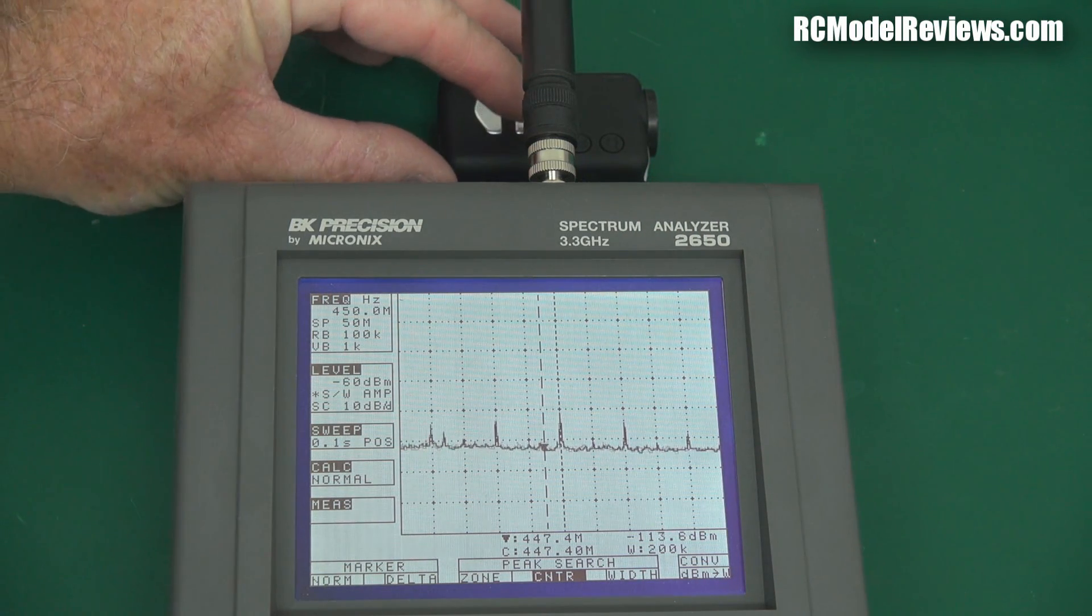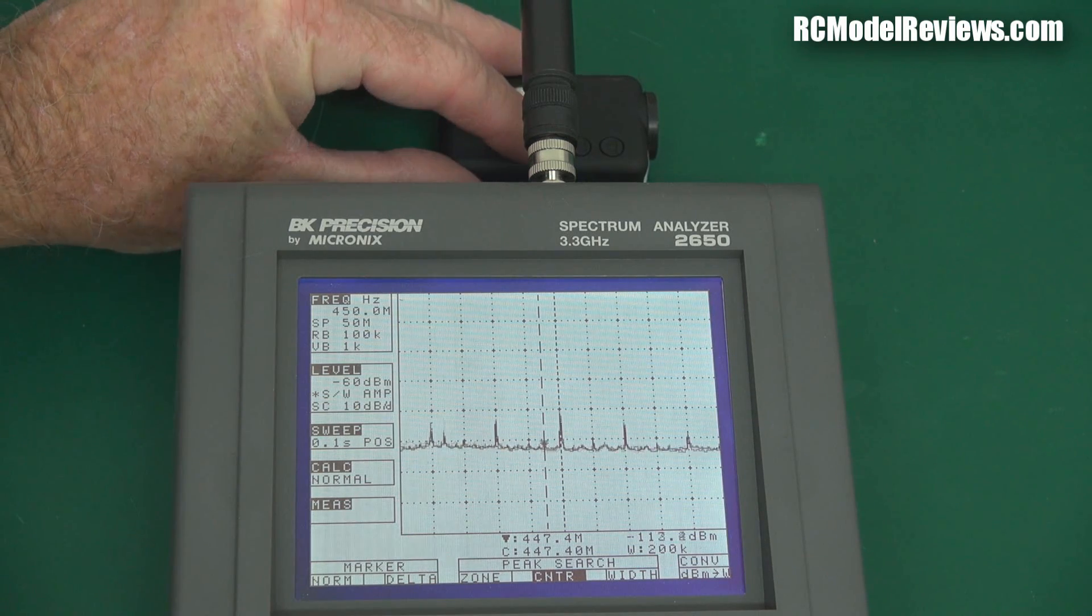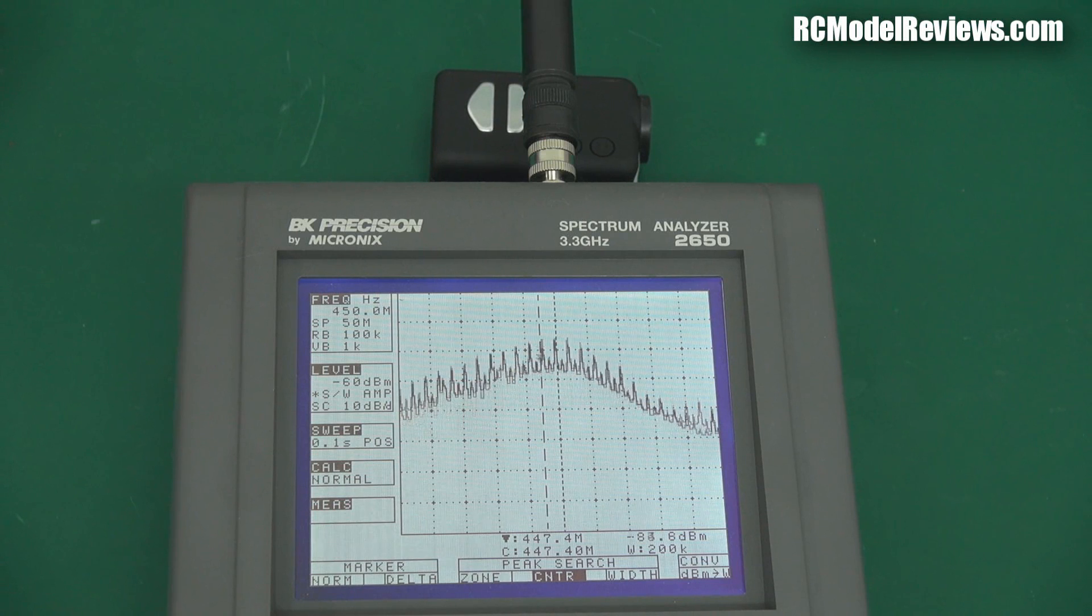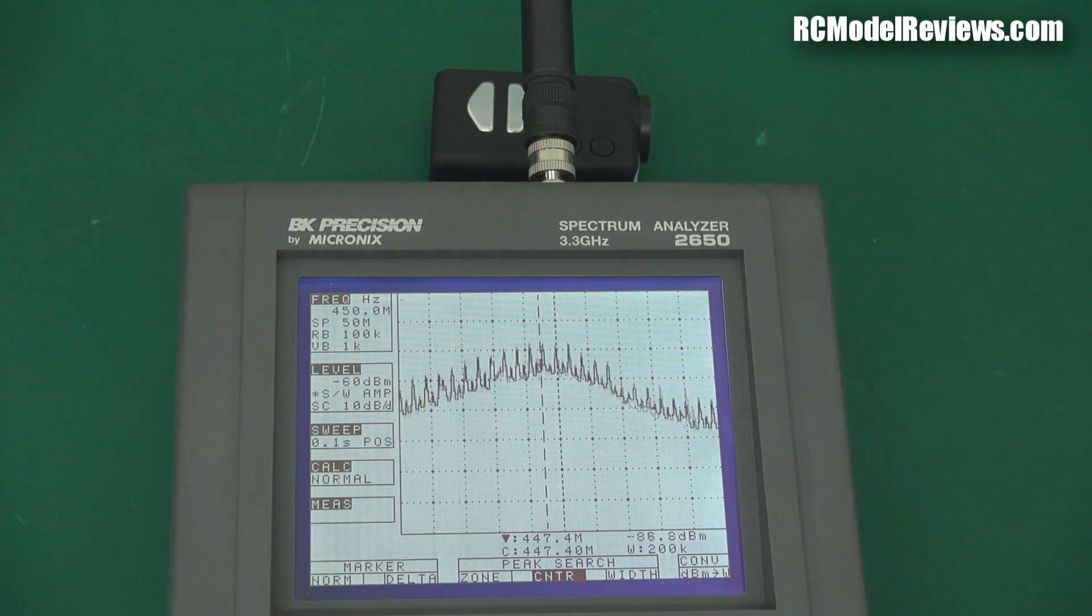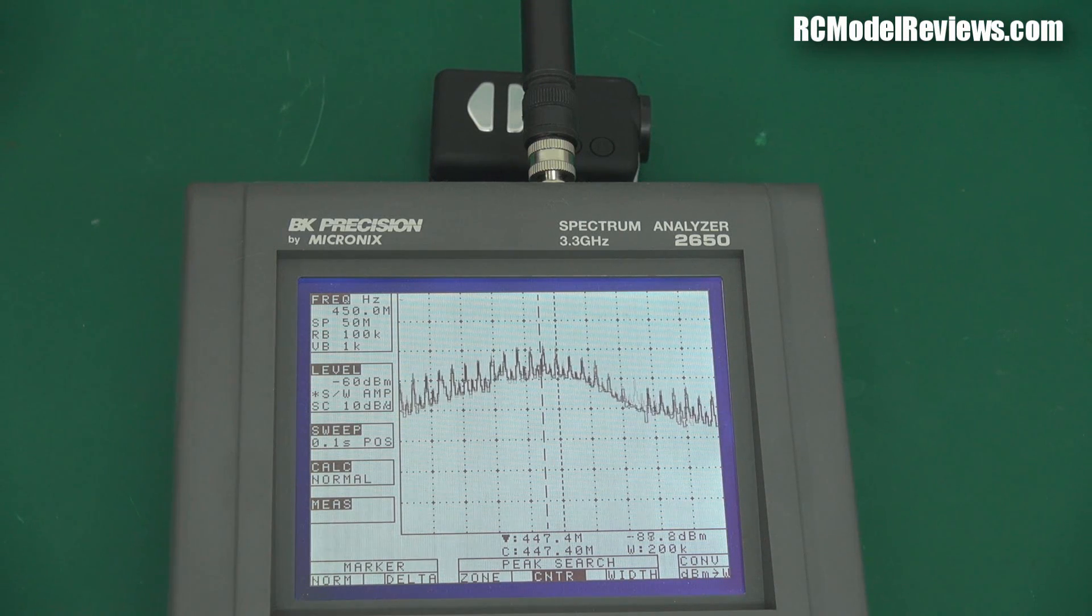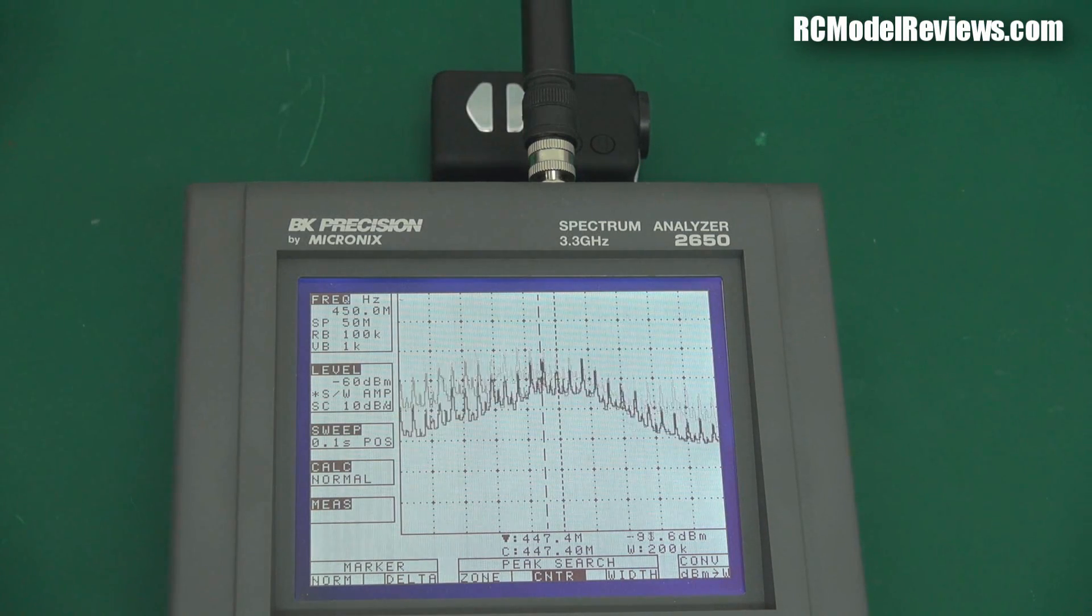So I'm going to turn on the Mobius now and remember our baseline is minus 112 decibels. Whoa, look at that. That's jumped up and it's now bumped itself up to minus 86. So that's the difference. 112 minus 86, I'm going to get my calculator because I'm old and I forget. So it's 112 minus 86 equals 26 decibels of noise which is quite a bit actually. Quite surprisingly high.